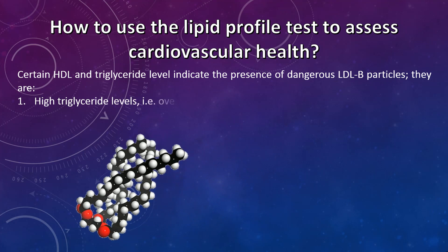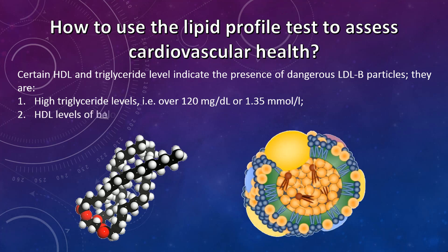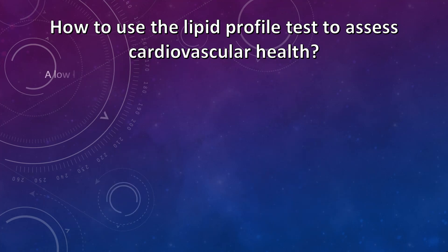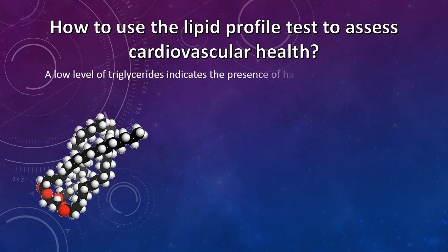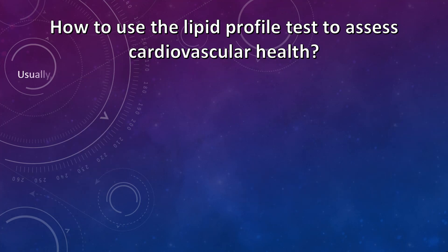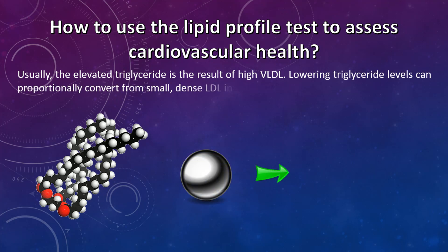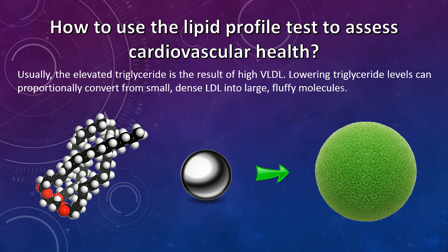Indicators of dangerous LDL-B particles include: high triglyceride levels — over 120 mg/dL (1.35 mmol/L) — and HDL levels below normal — below 40 mg/dL (1.03 mmol/L) in men and below 50 mg/dL (1.29 mmol/L) in women. A low level of triglycerides indicates the presence of harmless LDL-A particles. Usually, elevated triglyceride results from high VLDL. Lowering triglyceride levels can proportionally convert small, dense LDL into large, fluffy molecules.